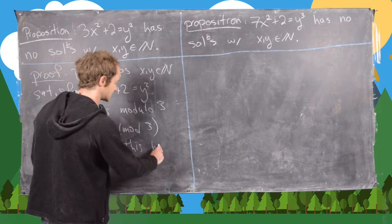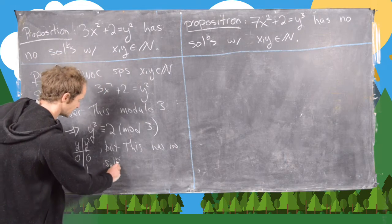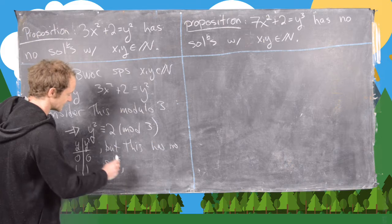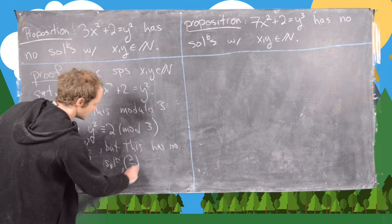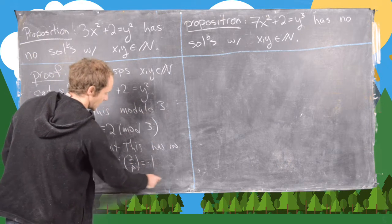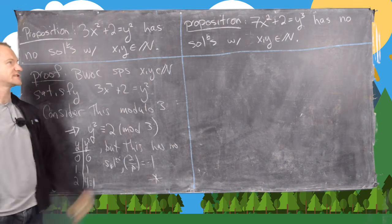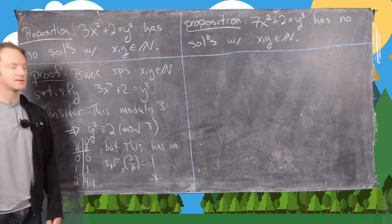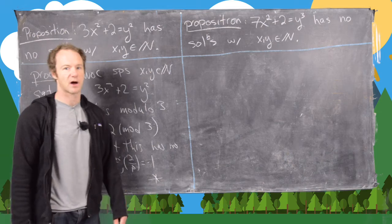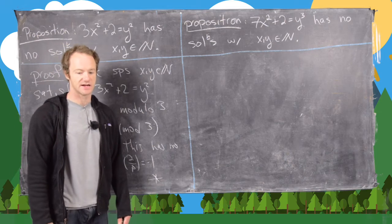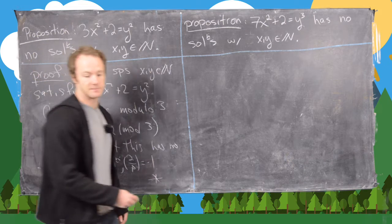In other words, in terms of the Legendre symbol, (2/3) = −1, so that's our contradiction. This next proposition has a very similar proof — if you want to pause the video and try it right now, that's probably a good idea. Otherwise I'll get started.